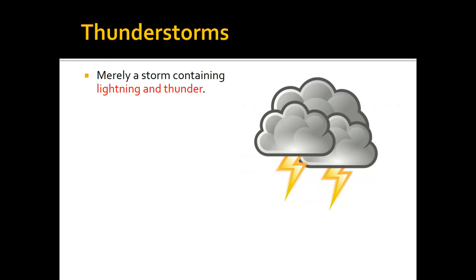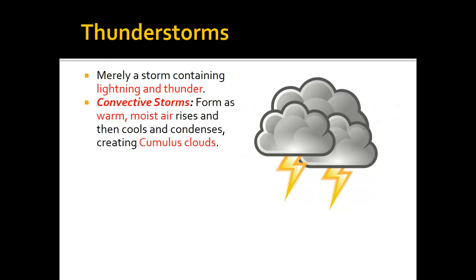Most thunderstorms are convective in that they form from two very key ingredients: heat and moisture. Make sure you write that down — guaranteed you'll see that on a quiz. Thunderstorms form from heat and moisture. Those two things allow air to rise, and as it rises, it expands, cools, and condenses forming clouds. If that air is allowed to continue to rise, the clouds get taller and taller, eventually forming cumulus or cumulonimbus clouds, and those are what give us thunderstorms.